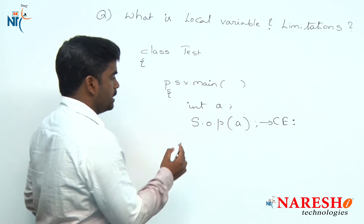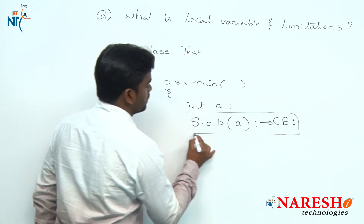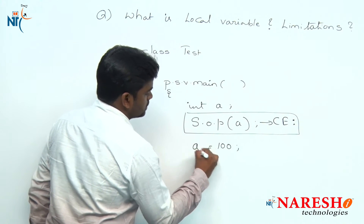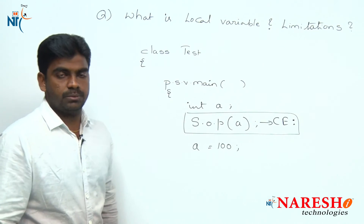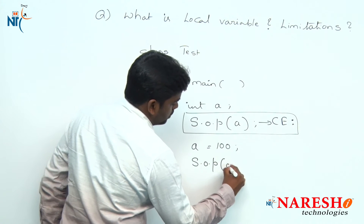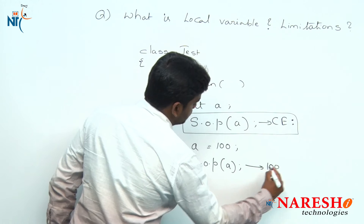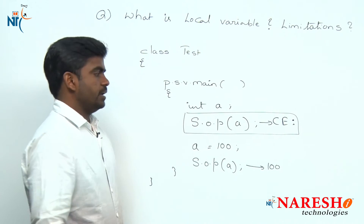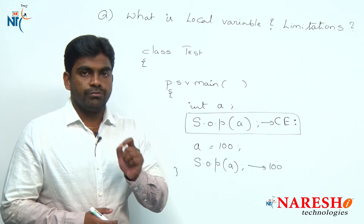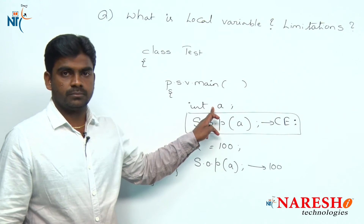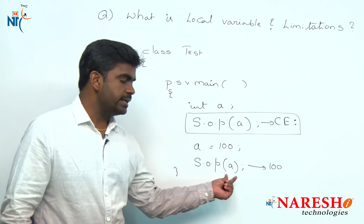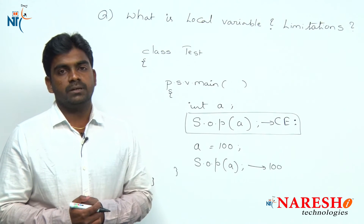The compile-time error occurs because local variables must be initialized — you have to provide a value before its usage. So if you assign a value, for example a = 100, and then access it using System.out.println(a), it will print 100 without any error. So the rule is: a local variable must be assigned a value before it is used.